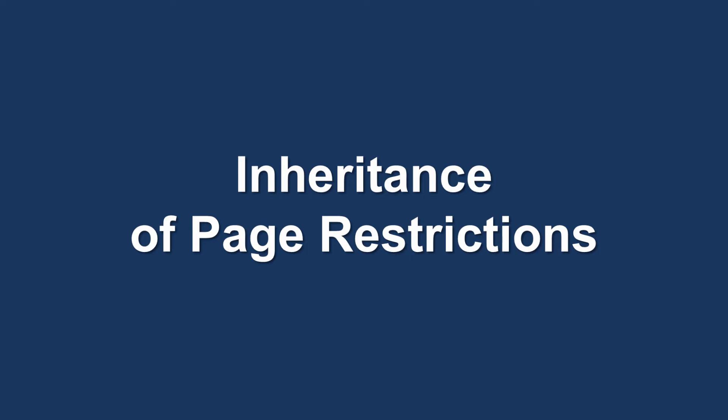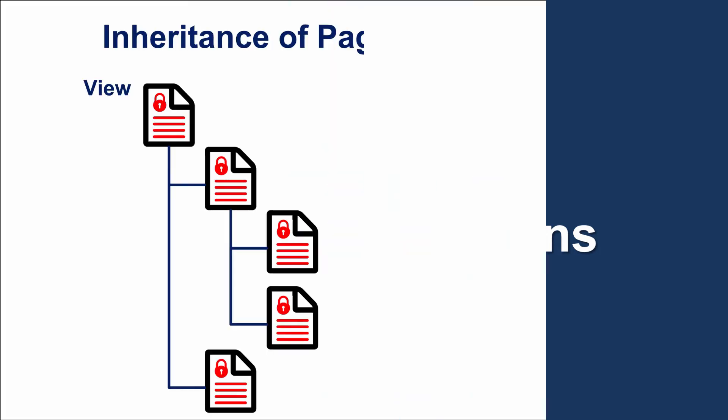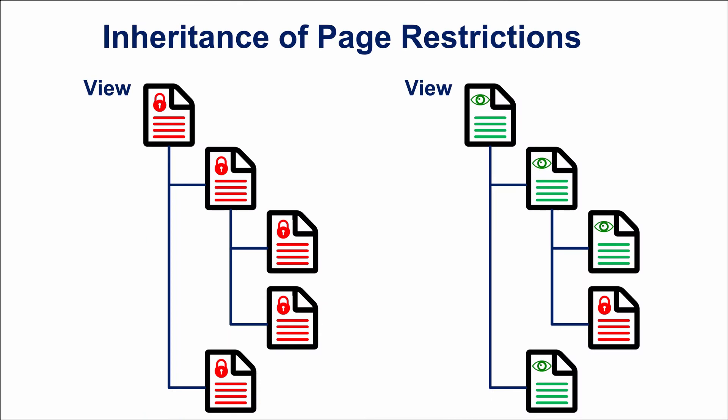The Restrictions dialog can always tell you when there are inherited restrictions that might affect who can view your page. Child pages inherit view restrictions from the parent page. So if you restrict viewing for a person or group, they won't be able to see that page and all its child pages.